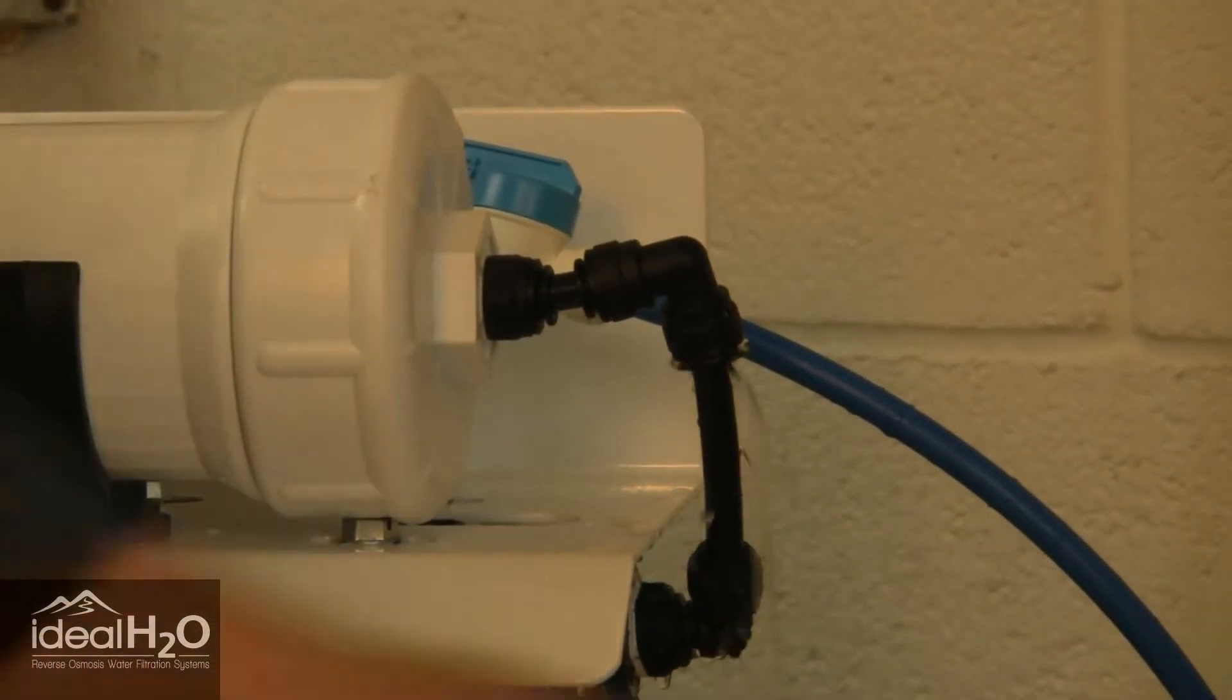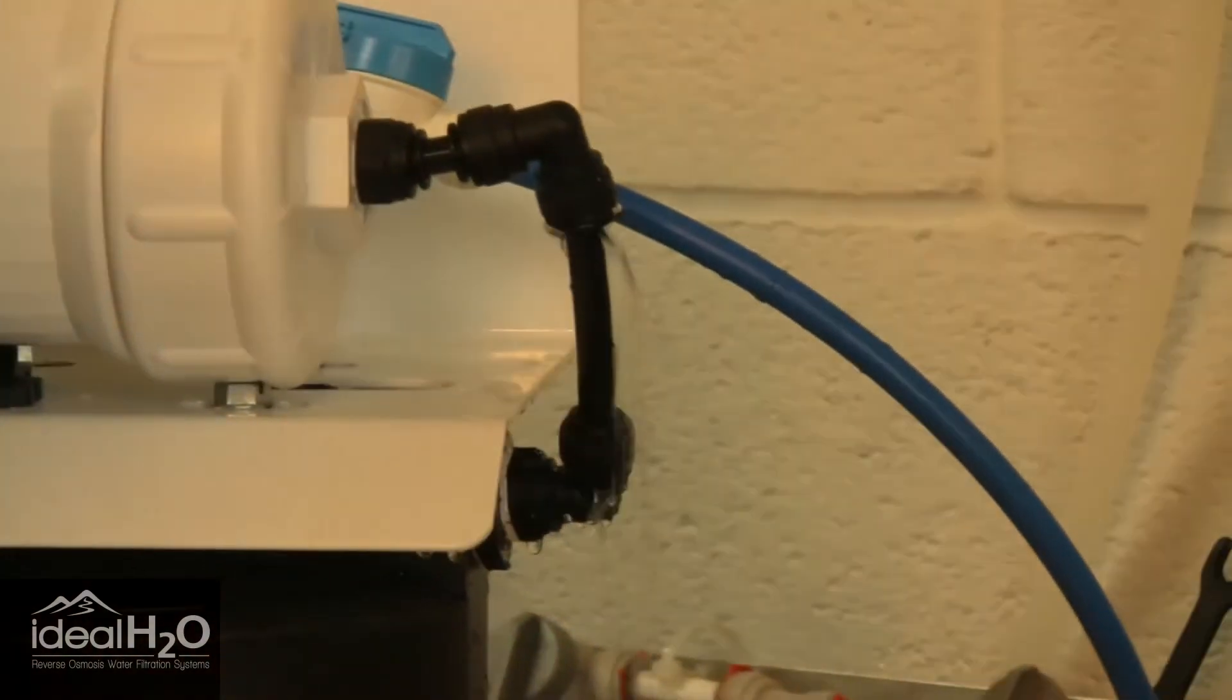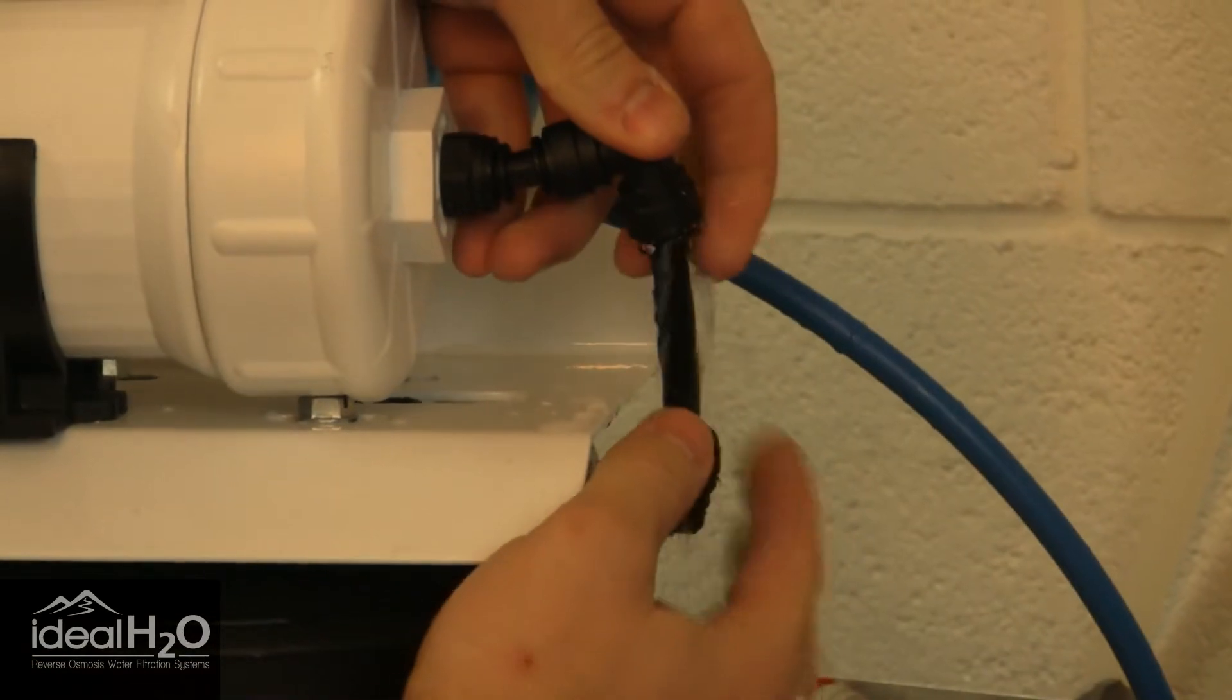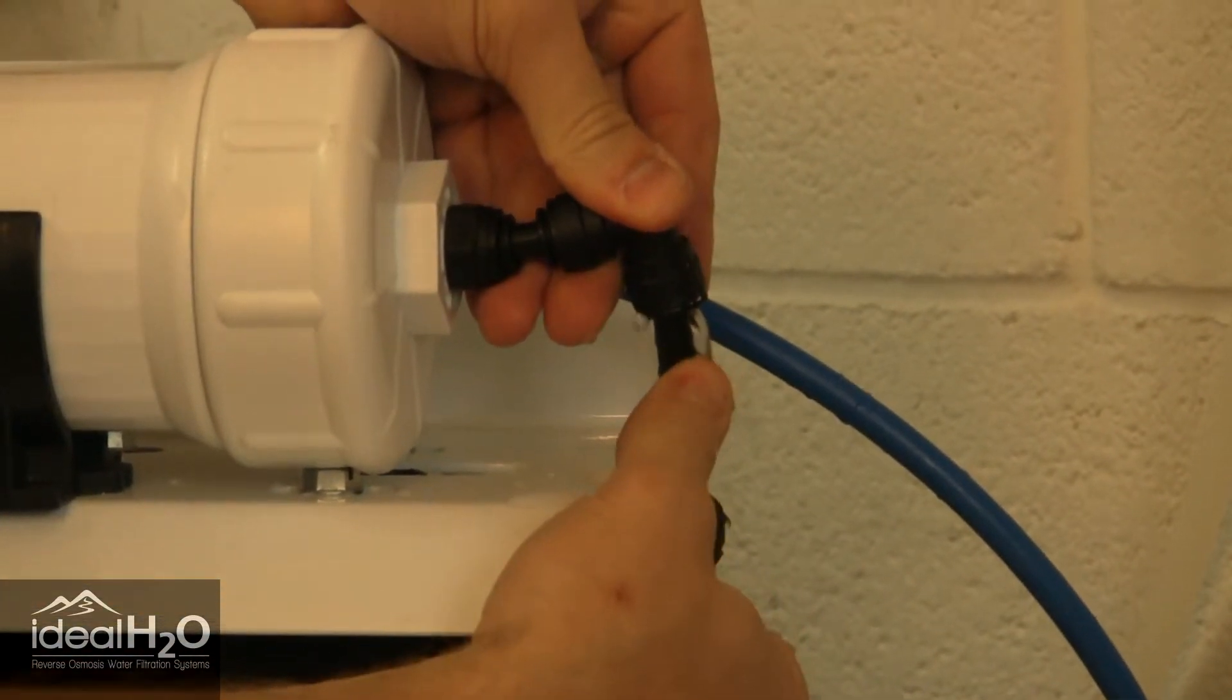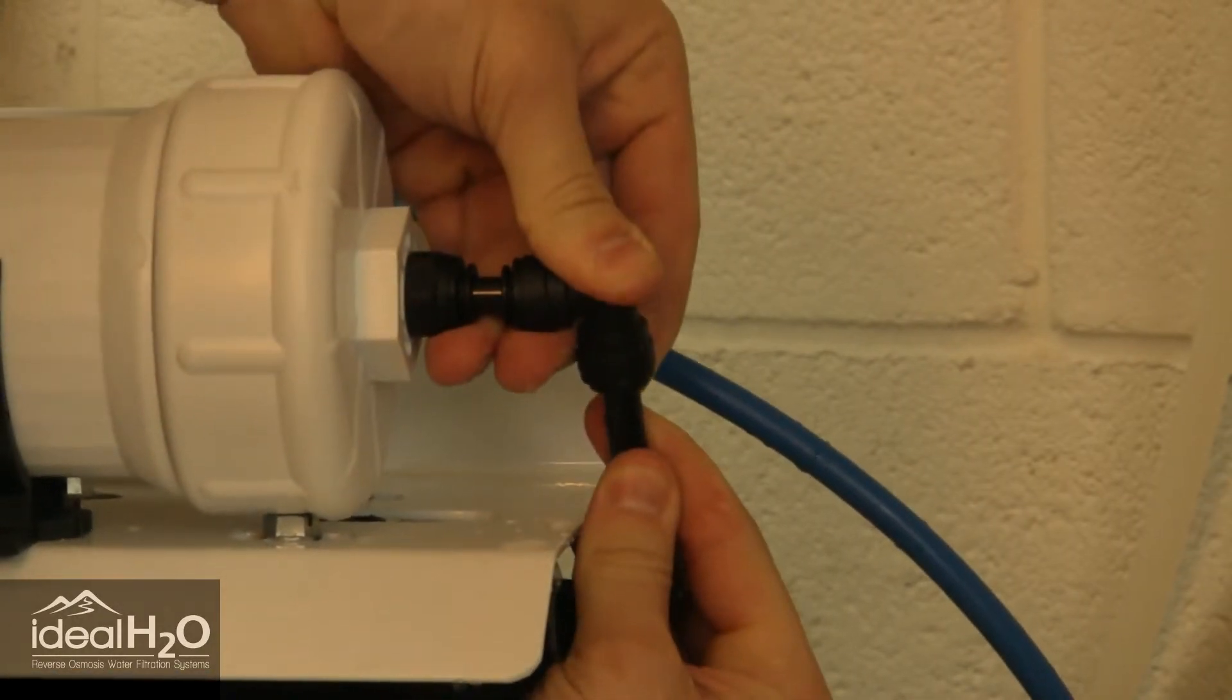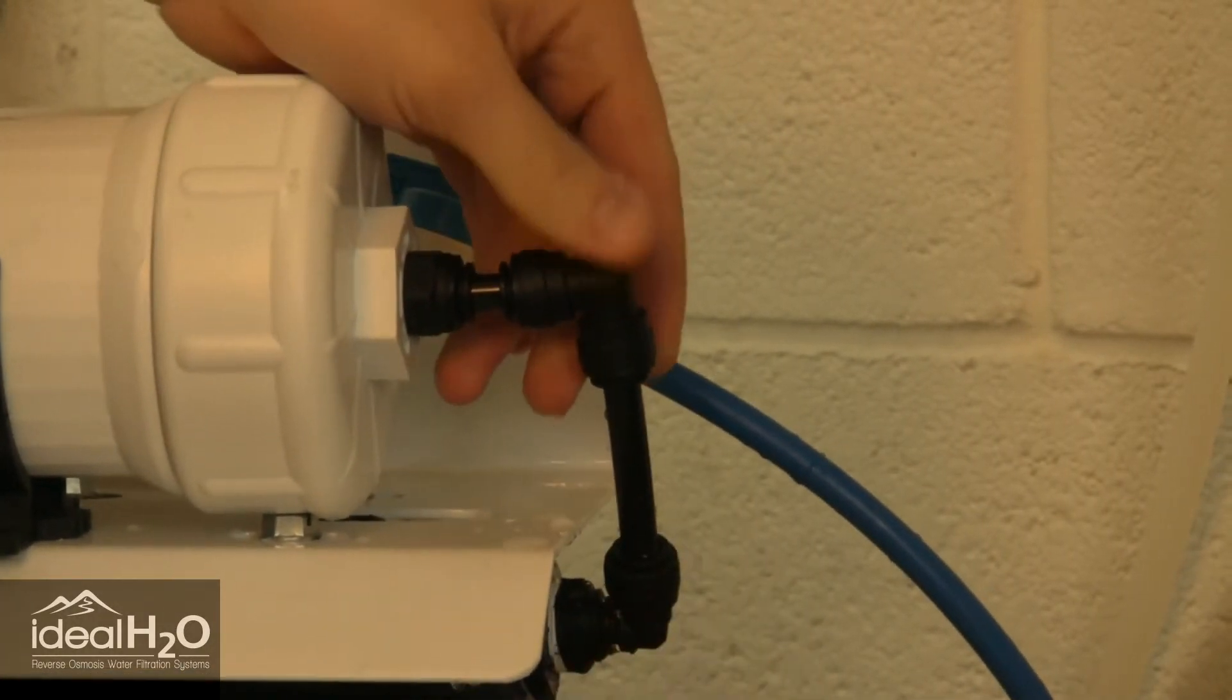So we'll start by turning off the feed line, and then all you're going to do is take the RO tubing and firmly push it up into the Quick Connect fitting here, and seat it, and it should prevent the leak.